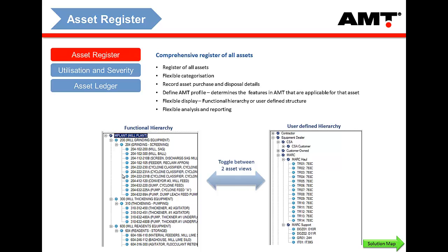The asset register captures information such as the model, serial number, when it was purchased, expected life, and categorizations — which customer it's with, who the sales rep is, your account managers, etc.